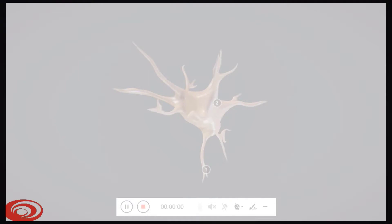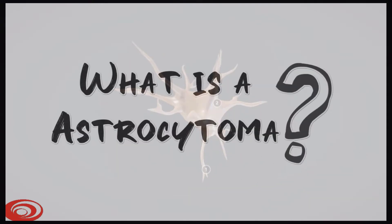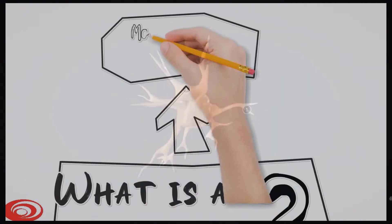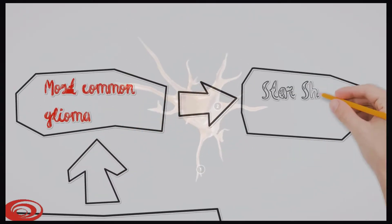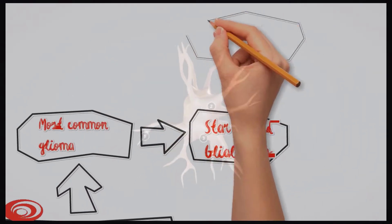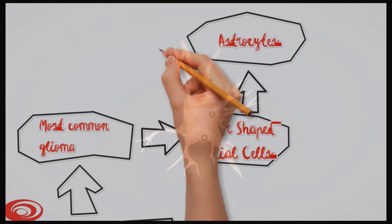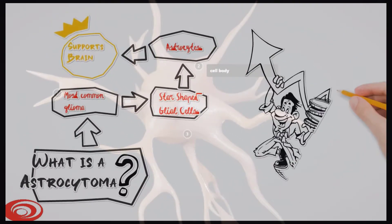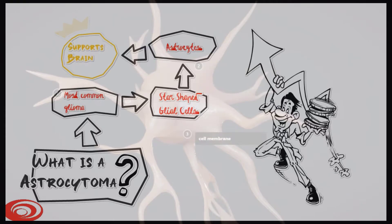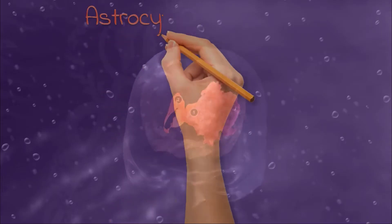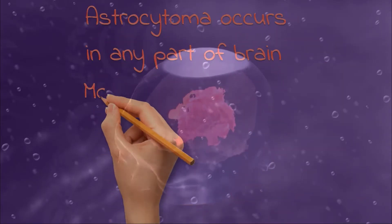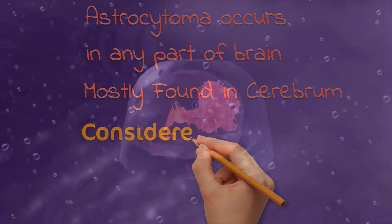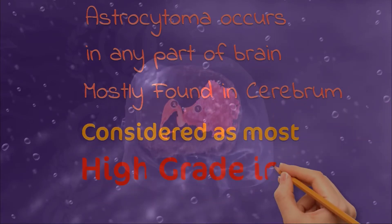Astrocytoma is the most common glioma. These are star-shaped cells called astrocytes that support the brain. Astrocytoma can occur in any part of the brain, but it is mostly found in the cerebrum, the major part of the brain, and is high grade in adults.